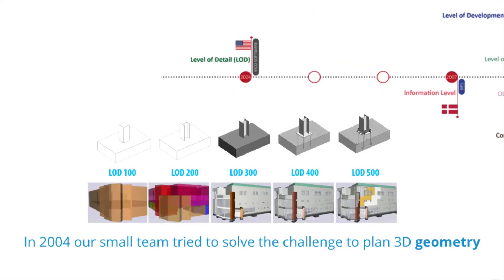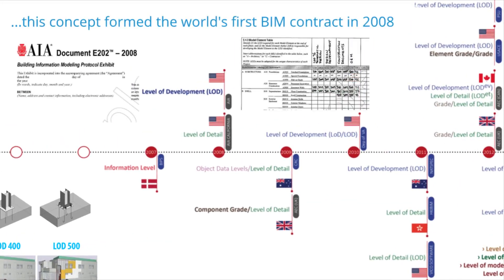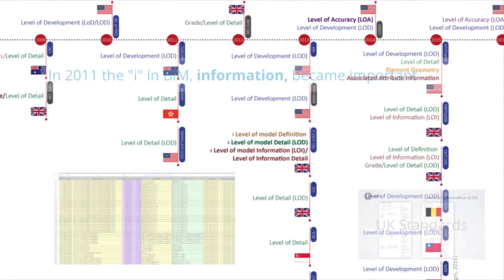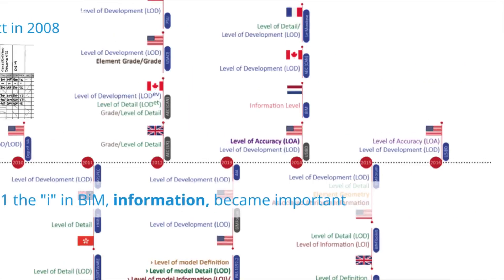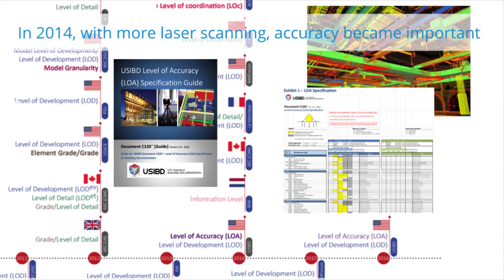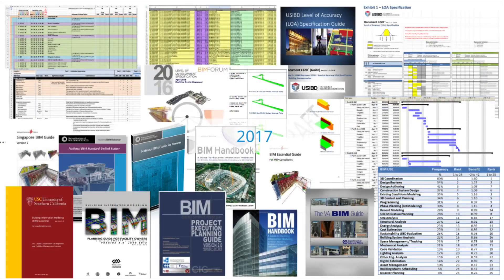Back in 2004, our small team tried to solve the challenge of planning 3D geometry by creating a scale of LOD 100 through 500. In 2008, that concept formed the basis of the world's first BIM contract. In 2011, information became important and the COBE schema was born. In 2014, laser scanning devices triggered the collection of huge amounts of measurement data and accuracy became important. So in 2017, we found ourselves with many ideas that can be used to plan and manage BIM workflows — including some fantastic specifications, robust data transfer methods, rich 100-plus page BIM guides, lists of BIM uses, and almost an endless supply of great ideas from authorities around the world.